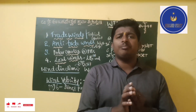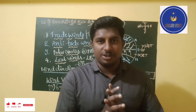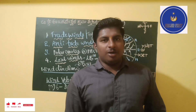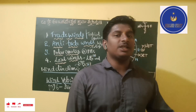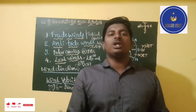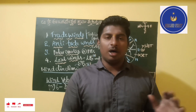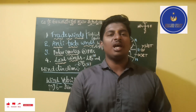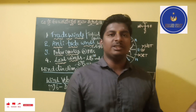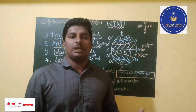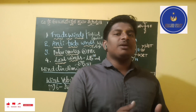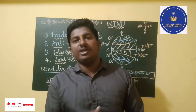Wind direction and wind velocity are very important for agricultural operations. If we don't know the wind direction and start spraying in the direction of wind, the entire spray solution will fall back on us. If we don't know the wind velocity and go for spraying or sprinkler irrigation, the application will not be uniform. Wind direction is measured using a wind vane, which shows from which direction the wind is moving.